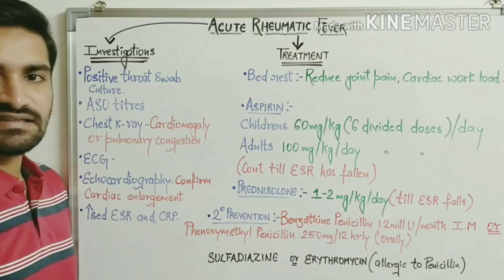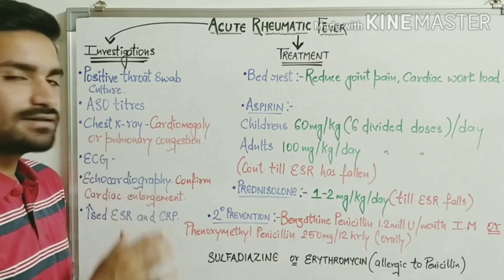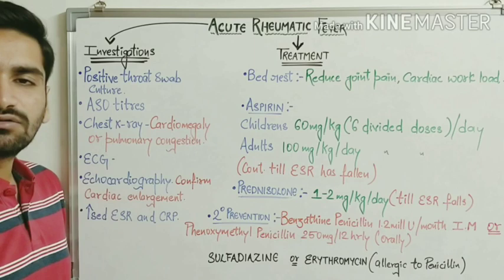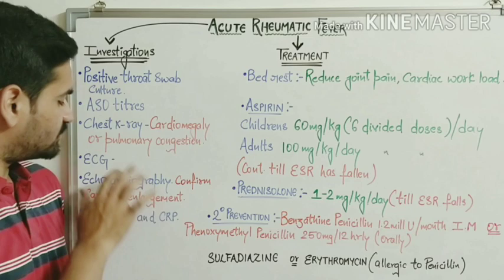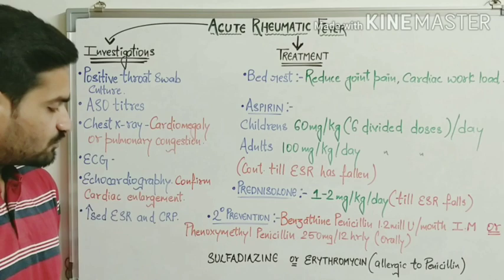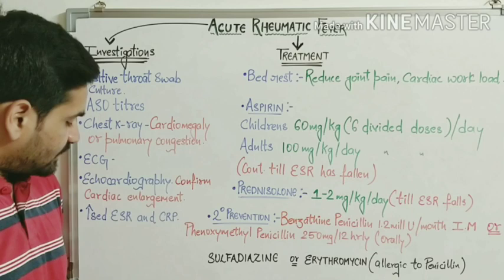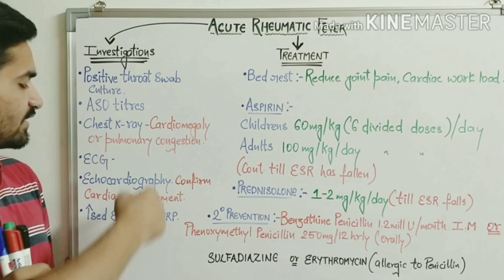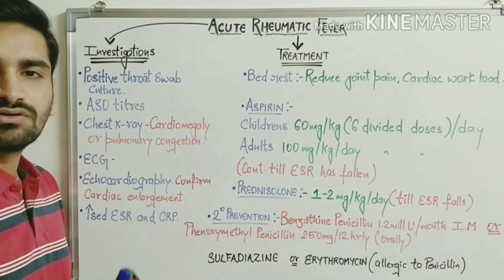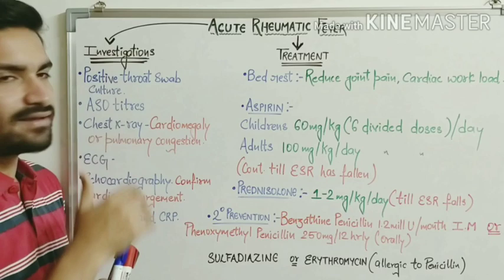On chest X-ray, you can see cardiomegaly or pulmonary congestion. ECG is also a common investigation for cardiovascular disorders; you may see changes in the PR interval or other ECG changes. Echocardiography is used to confirm cardiac enlargement. Finally, increased ESR (erythrocyte sedimentation rate) and elevated C-reactive protein are also important investigations for acute rheumatic fever.